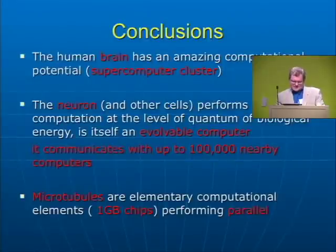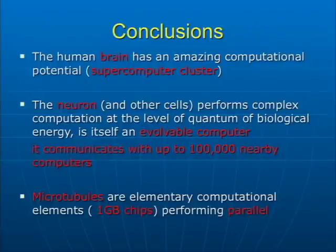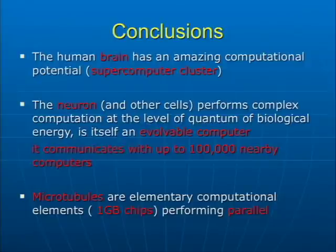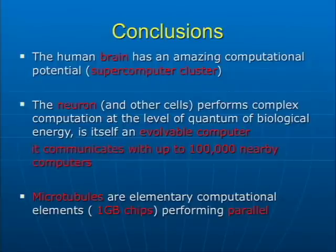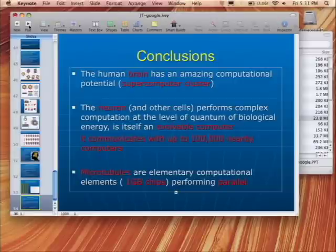The human brain, in my opinion, has an amazing computational potential — I call it a supercomputer cluster. The neuron is a single computational unit, like any other cell, that performs complex computational processes at the level of the quantum of biological energy. It's an evolvable computer which communicates with up to 100,000 nearby computers. Within each computer, you have microchips — microtubules — as elementary computational elements with approximately one gigabyte of memory. Thank you very much.